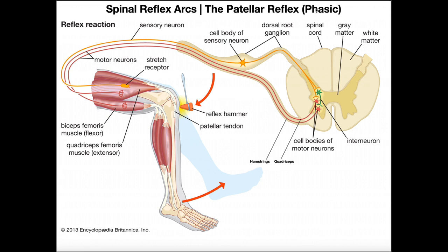This is also what's called a phasic reflex. Phasic is a type of reflex where the reflex is only present as long as the stimulus is present. So if you strike this with a reflex hammer, you're only going to see one quick reflex — it's not going to stay doing that over and over again. That would be a tonic reflex, and usually that's indicative of an upper motor neuron lesion. So phasic reflex: only present as long as you apply the stimulus.